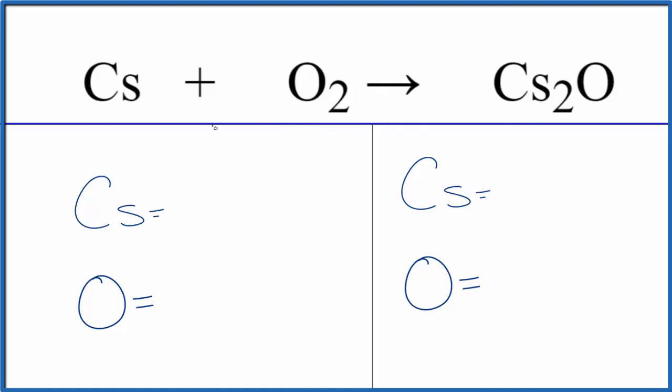So to balance the equation let's count each atom up: one cesium atom, two oxygen atoms. Product side we have two cesium and one oxygen.